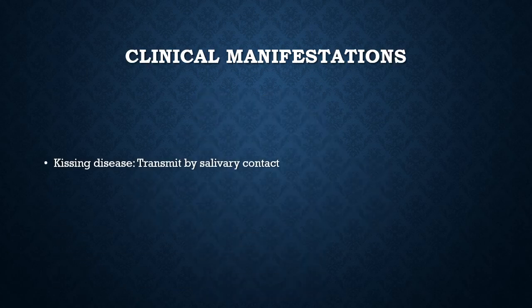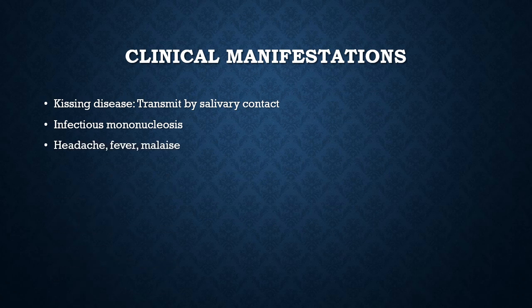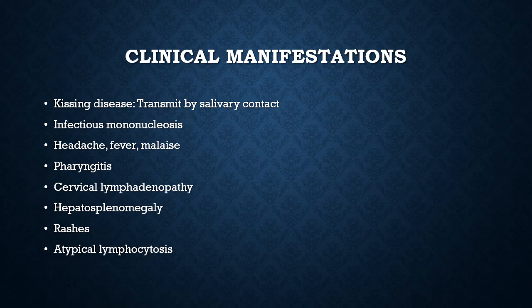Infectious mononucleosis is also called the kissing disease because it is transmitted through salivary contact, mostly affecting young adults in developed countries. It is characterized by headache, fever, malaise, pharyngitis, cervical lymphadenopathy, hepatosplenomegaly, rashes following ampicillin therapy, and atypical lymphocytosis.